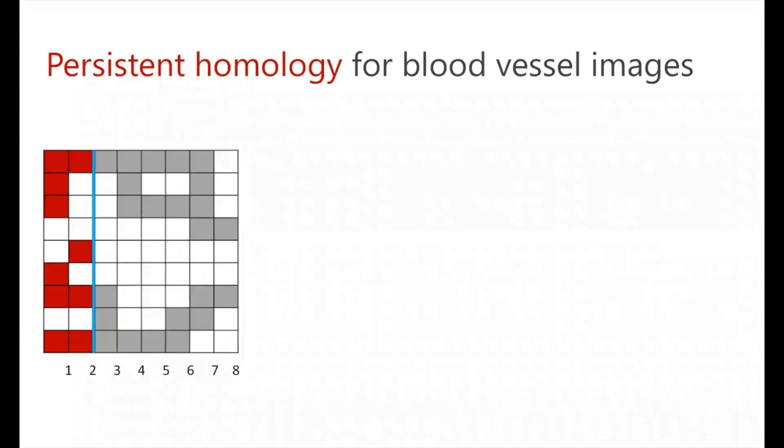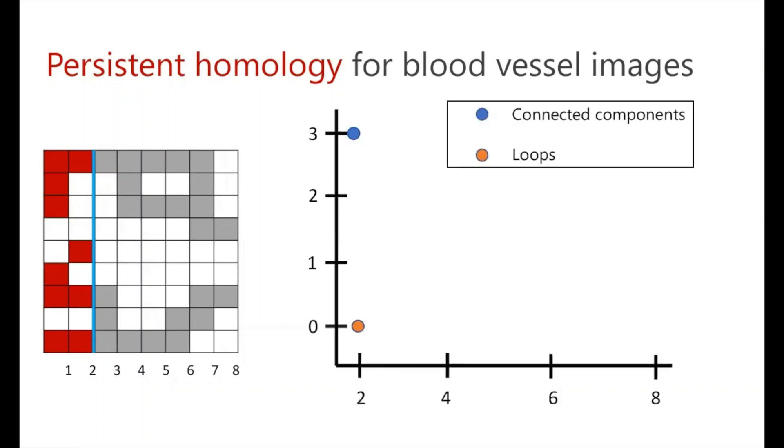So what we're going to do to compute our first filtration is we're just going to move this blue line a few pixels from left to right over our binary image and consider the red pixels that have been crossed so far. So from this we observe that we have three connected components and zero loops.